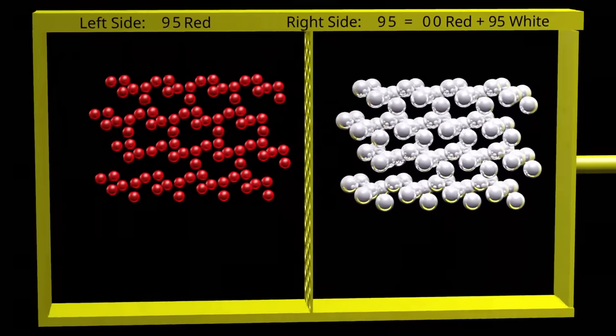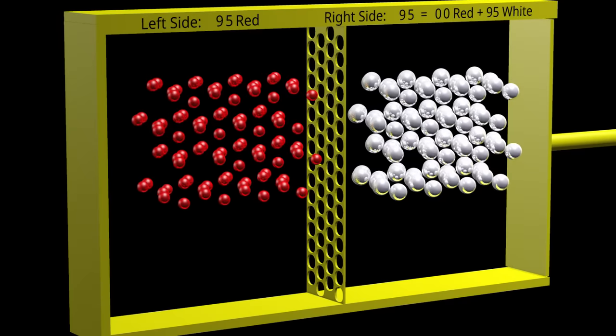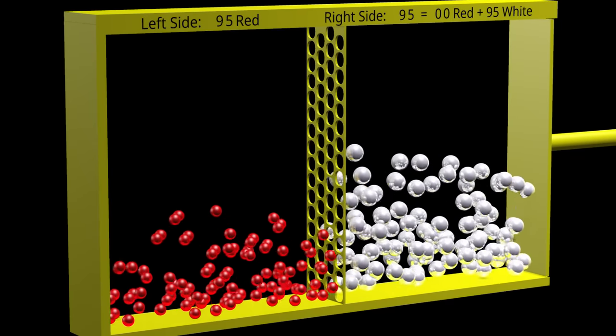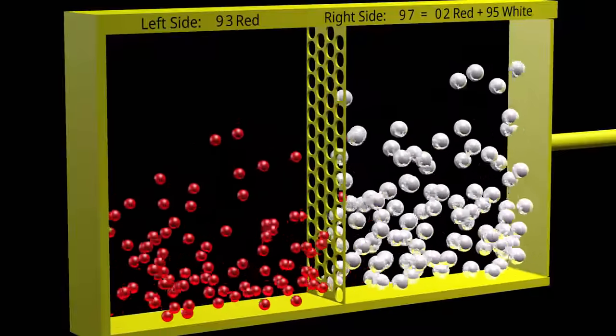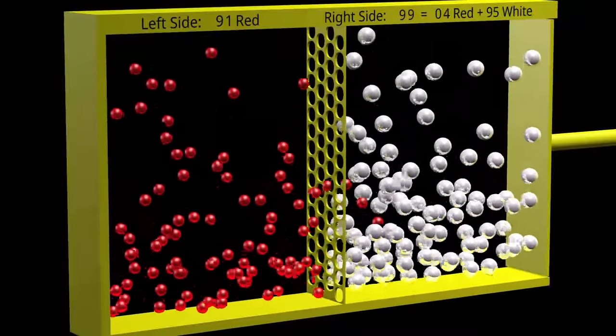We begin with the exact same number of particles on each side of the membrane. At the top of the box, we indicate the number of each type of particle on each side.